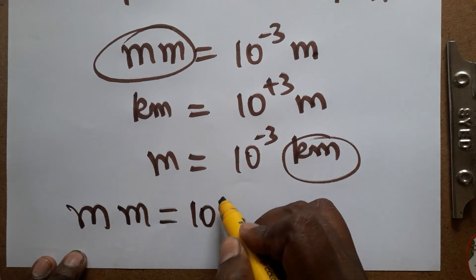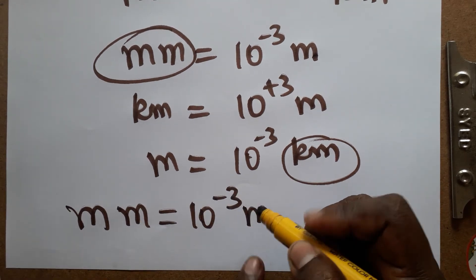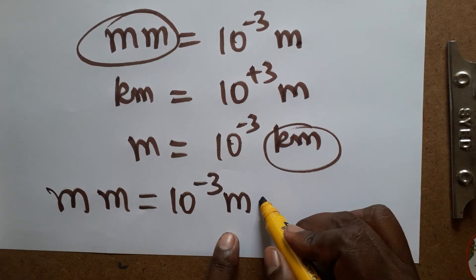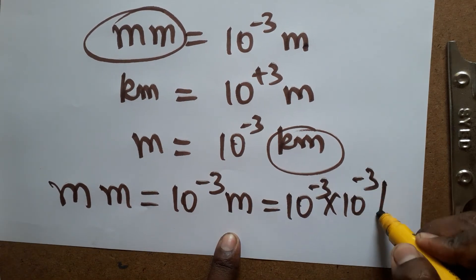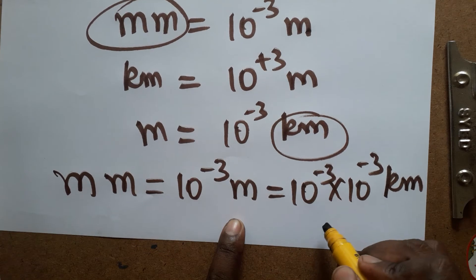Millimeter to meter is 10 power minus 3 meters. Meter to kilometer is again 10 power minus 3, so 10 power minus 3 into 10 power minus 3 kilometers.